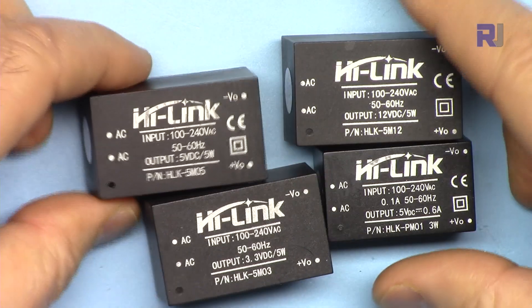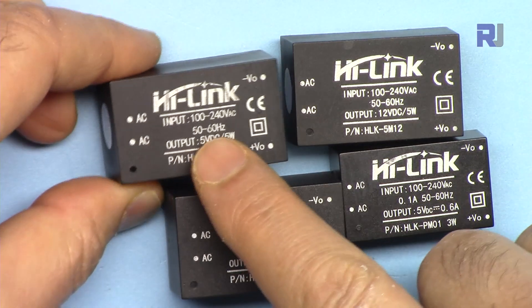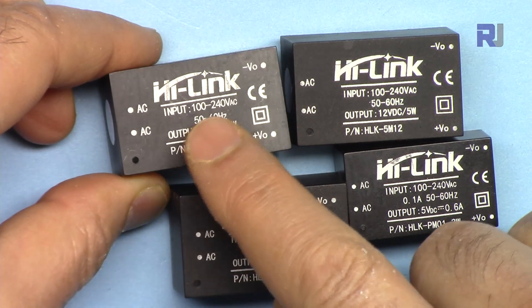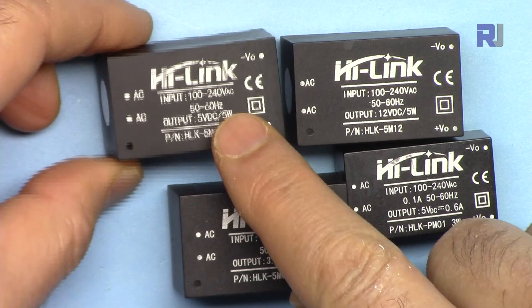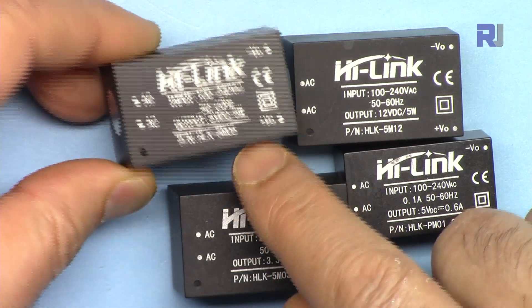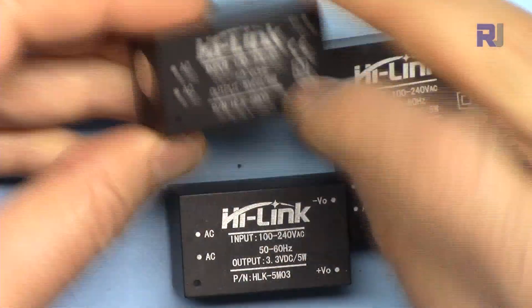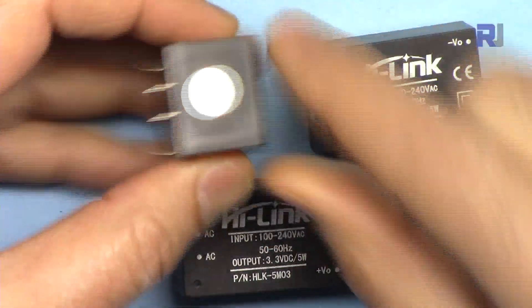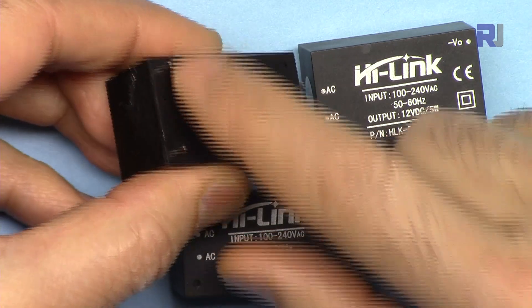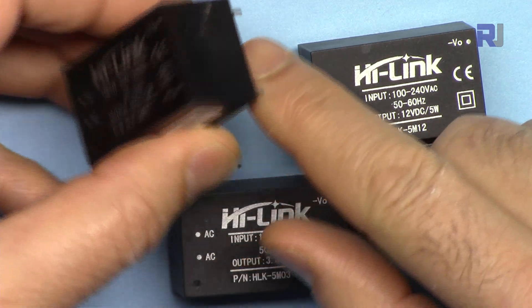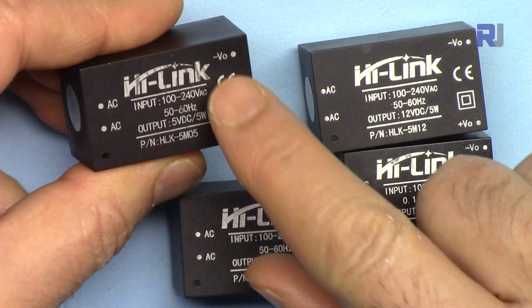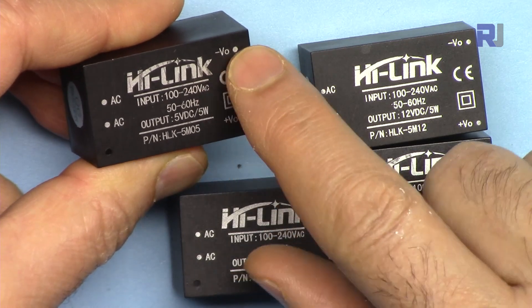The modules have input AC voltage rated from 100 to 240 volts, which means they can work anywhere in the world either with 50 or 60 Hertz AC. They've labeled these two pins here as AC, and then we have two pins for the DC labeled as negative V out and positive V out.